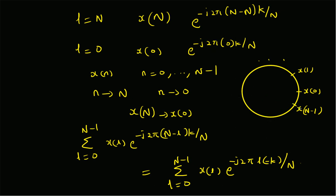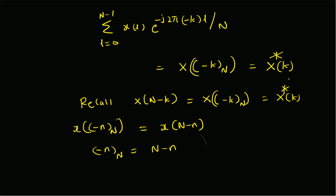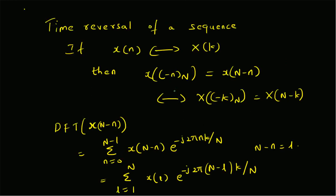For the term l=N, we replaced it with l=0 because they are equivalent — we can verify this by placing the sequence on a circle, confirming x[N]=x[0]. The summation then becomes l=0 to N-1 of x[l] e^(-j2π(N-l)k/N), and ignoring the term N (since e^(-j2πN/N)=1), we are left with x[l] e^(-j2πl(-k)/N). This is X[-k mod N], which equals X[k]* and X[N-k], verifying the time reversal property of the DFT. Thanks for watching.